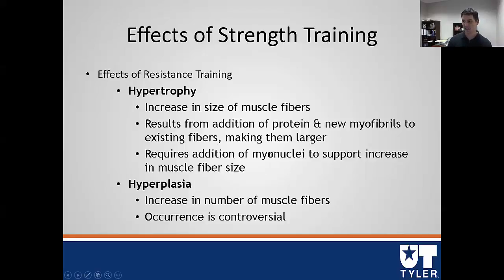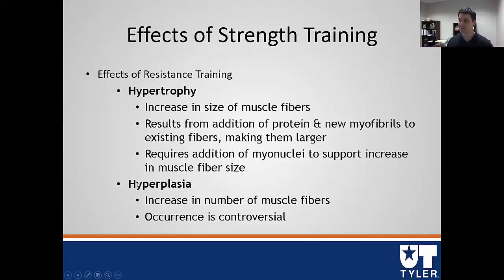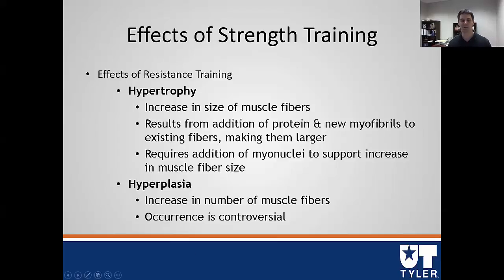Growing muscle fibers requires the addition of myonuclei — this is where the satellite cells come in, as discussed earlier in this module. Satellite cells provide mononuclear support in order to make the proteins needed to get bigger. Hypertrophy — growing of a single muscle fiber — is very well established in the lab. We can actually take pictures and show that muscle fibers get much larger. Hyperplasia is an increase in the actual number of muscle fibers. We can see this very obviously in mice and rats, where new muscle fibers are being put in — getting bigger and growing new fibers.